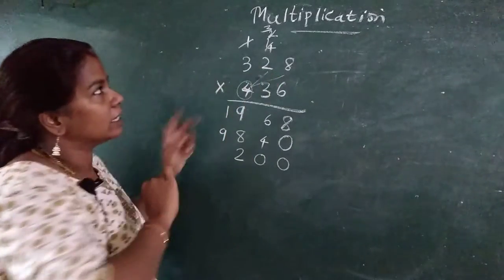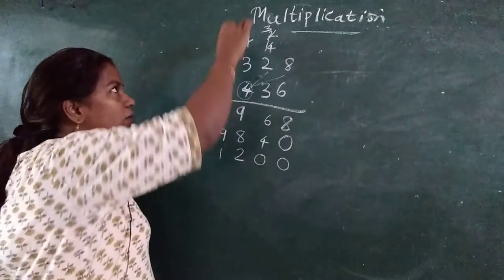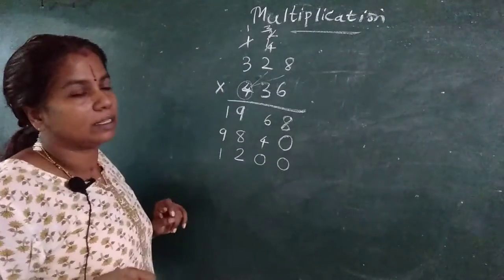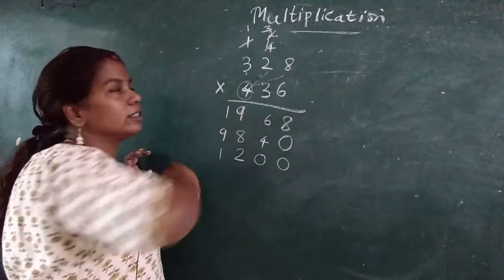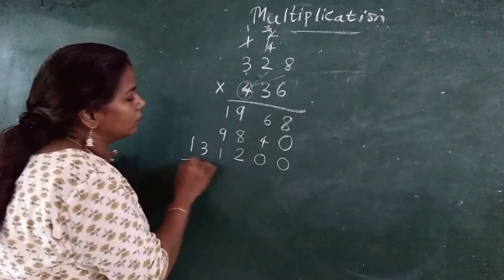4, 2's are 8. 8 plus 3, how much? 11. 1 here, 1 up. Got it? Then 4, 3's are 12. Plus 1, 13. Very good.